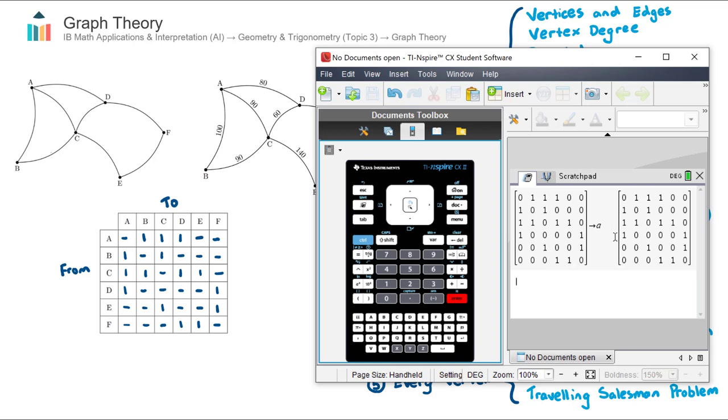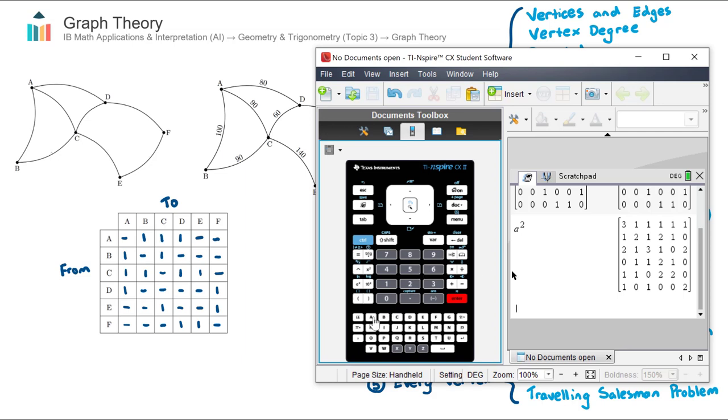How can I find out all the possible two-step routes? Well, now that I have this matrix in my calculator, I can go A to the power of two, hit enter. And this adjacency table now shows all of my two-step routes. What if I went A to the power of three? That shows all the possible three-step routes.